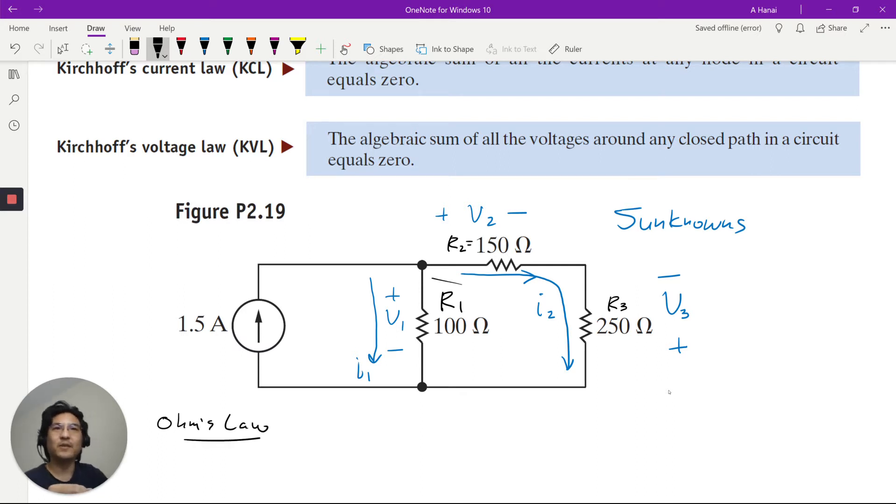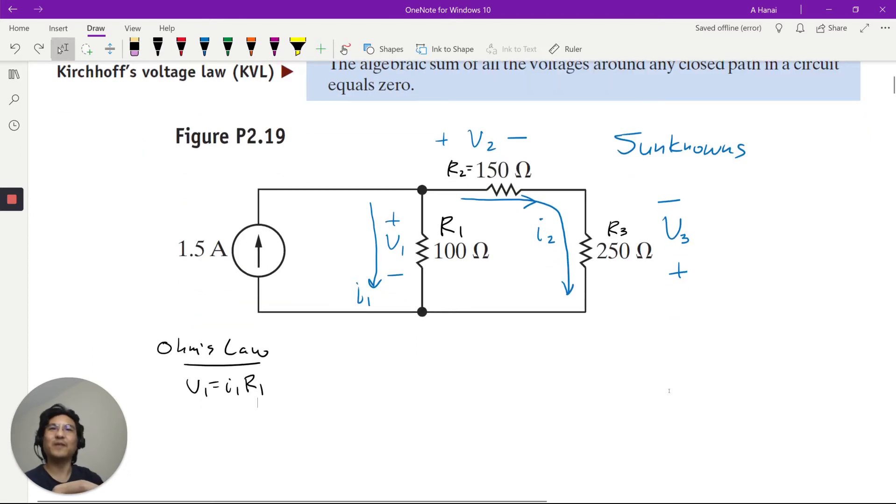Okay, so for this one, notice that voltage is positive going down, current is positive going down. So V equals IR. How about this one? Voltage is positive going toward the right, current is positive going toward the right. So V equals positive IR.